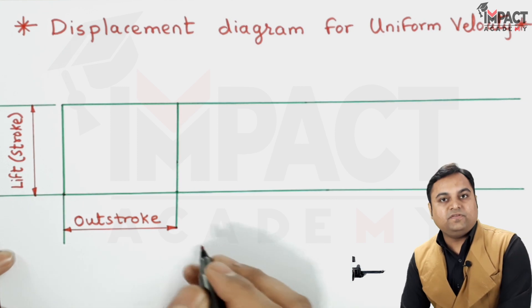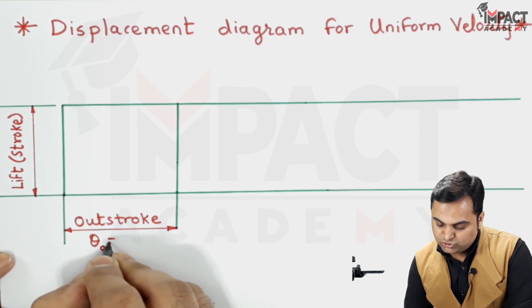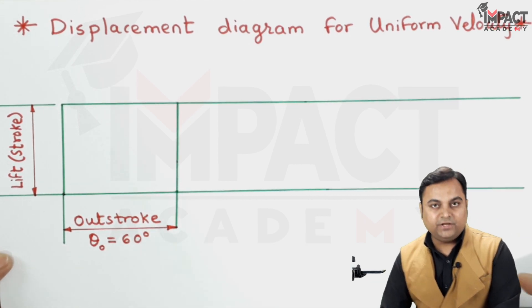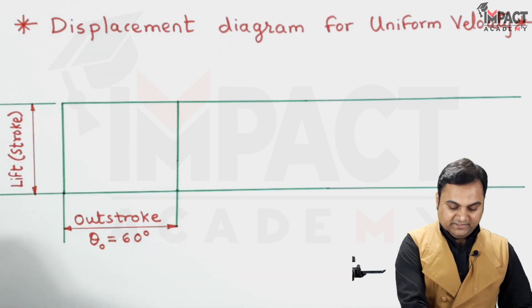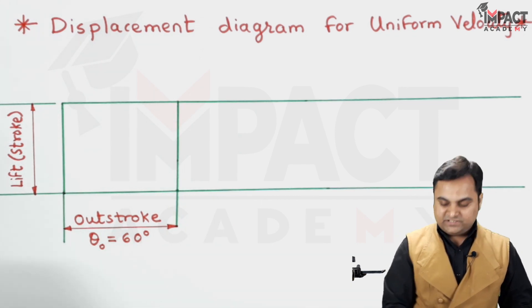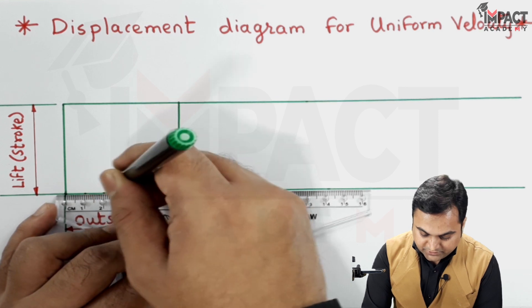So this is the outstroke and here my assumption is that this outstroke is 60 degrees. So I have taken 6 centimeters. Next I would be dividing this outstroke into 6 equal parts, taking 1 centimeter distance.